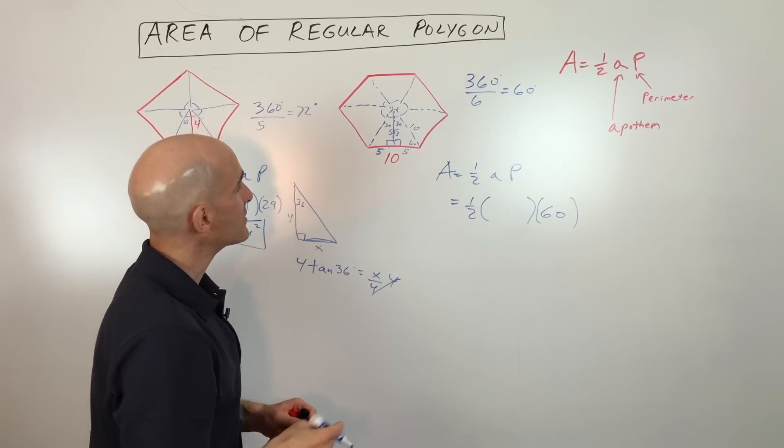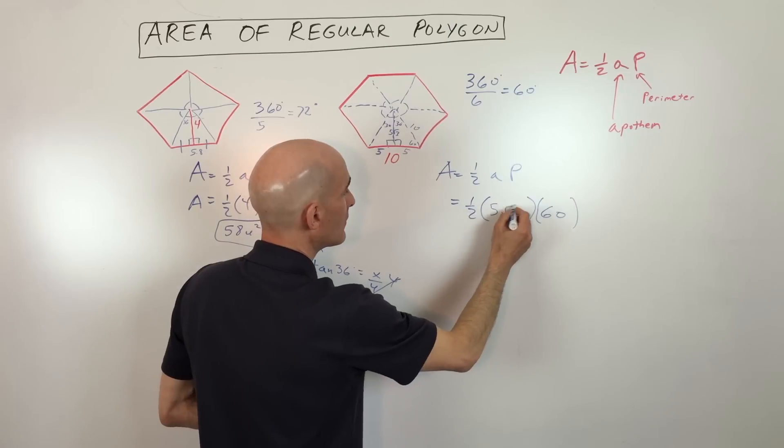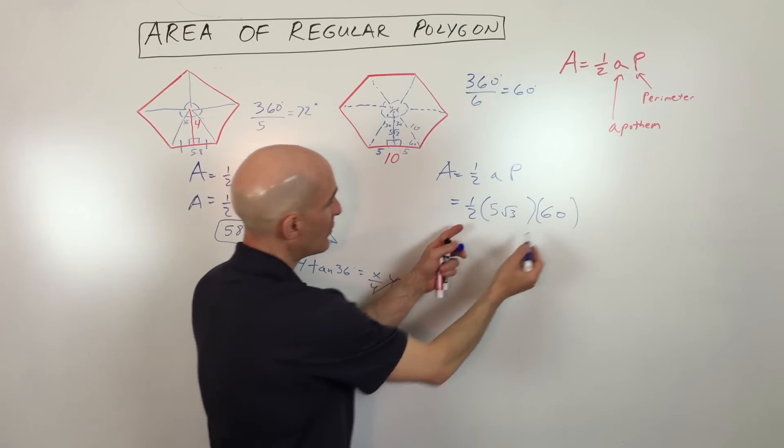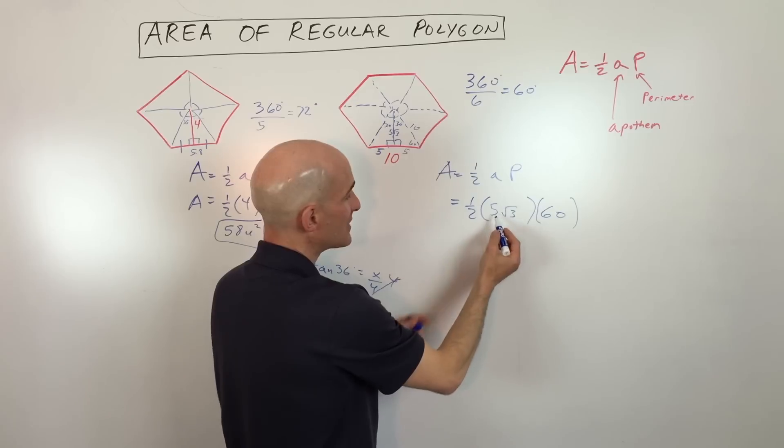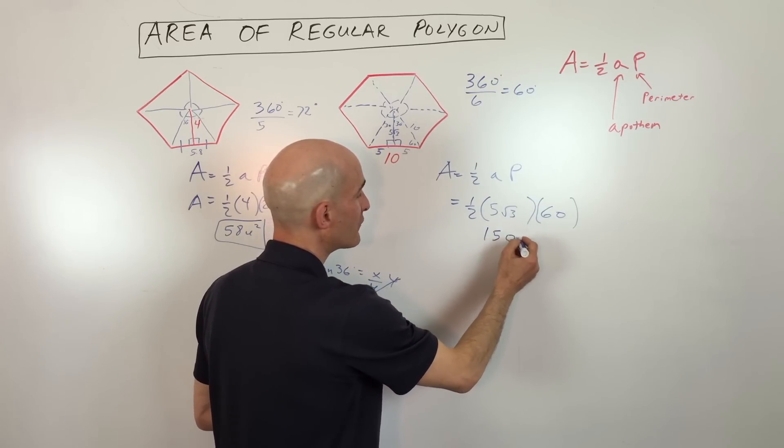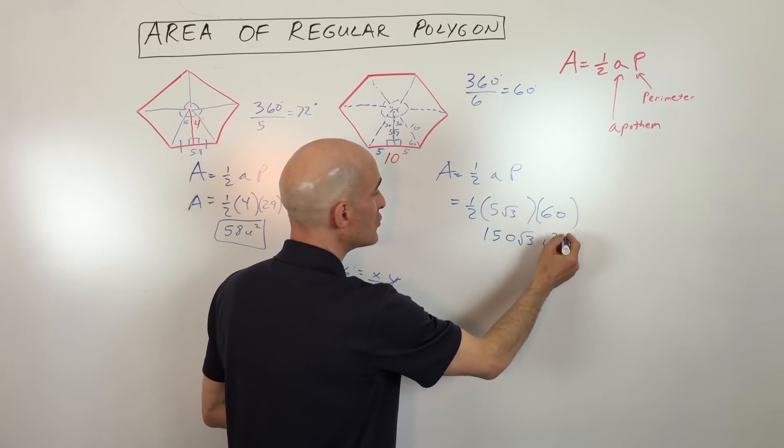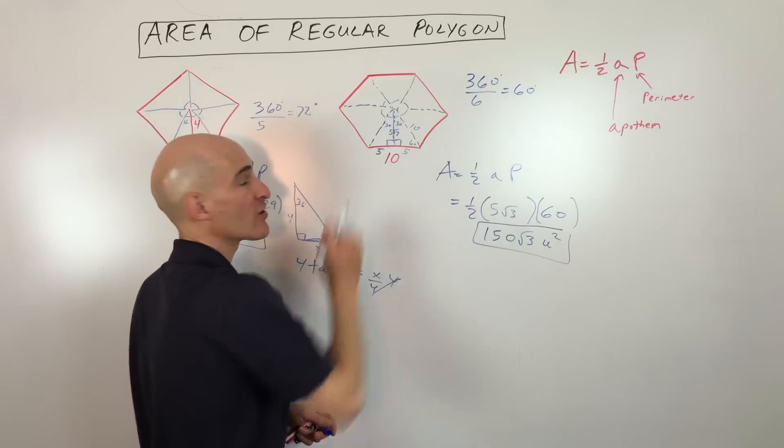So that's it. So we got it. So it's 5 root 3. And if we multiply all that out, what do we get? Half of 60 is 30 times 5 is 150. So we get 150 square root of 3 units squared is going to be the area of this hexagon.